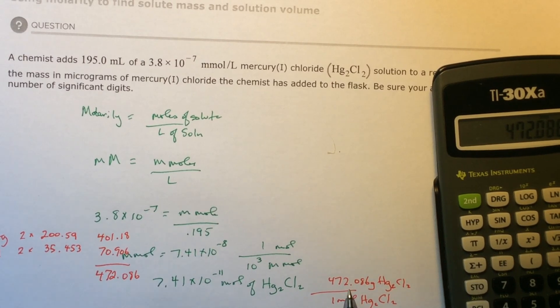So I'm going to multiply these two together. 472.08 times 7.41 times 10 to the negative 11th.